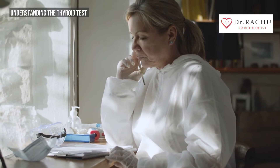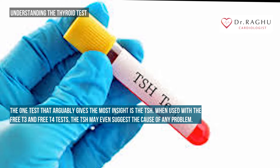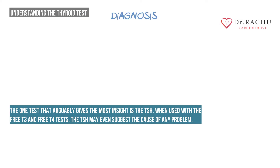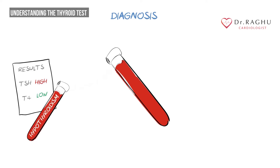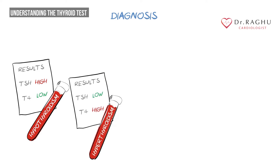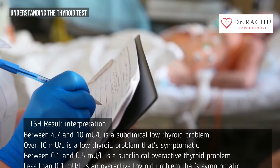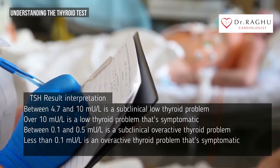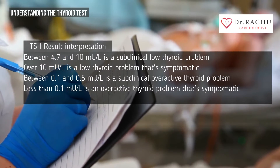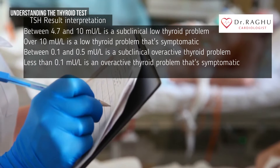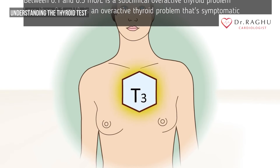Test results are just numbers until they are interpreted to give them meaning. The one test that arguably gives the most insight is the TSH. When used with the free T3 and free T4 tests, TSH may even suggest the cause of any problem. TSH values outside the normal range suggest a thyroid disorder. Values near the upper or lower range may suggest a subclinical disorder without any symptoms. A TSH value between 4.7 and 10 milli-international units per liter is a subclinical low thyroid problem; over 10 is a symptomatic low thyroid problem. Between 0.1 and 0.5 is a subclinical overactive thyroid problem; less than 0.1 is a symptomatic overactive thyroid problem.